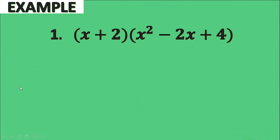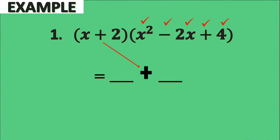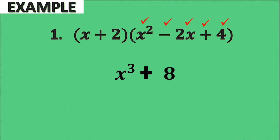Let's have some examples. The quantity x plus 2 times the quantity x squared minus 2x plus 4. Before applying the shortcut, let us check the form. Squaring x gives x squared, squaring 2 gives 4, and the product of x and 2 gives 2x. We have a plus operation in the binomial, and the first operation in the trinomial is minus — which is opposite. So the given takes the required form. Using the shortcut, we get a binomial with a plus operation. Cubing x gives x cubed, and cubing 2 gives 8 (2 times 2 times 2). Therefore, the answer is x cubed plus 8.